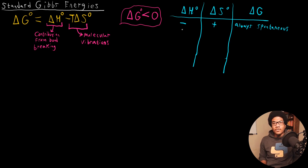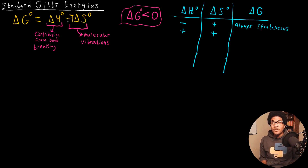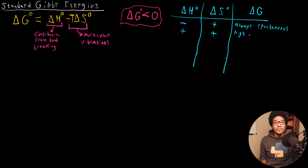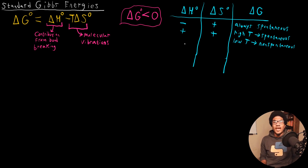What if enthalpy is positive and entropy is positive? We have an endothermic reaction with an increase in entropy. In this case, it's going to depend on temperature. If the temperature is really high, then the T delta S term is going to dominate the delta G expression and it'll be negative — spontaneous. But if the temperature is low, then the enthalpy term will dominate, it'll be positive, and the reaction will be non-spontaneous. So at high temperatures it'll be spontaneous, but at low temperatures it'll be non-spontaneous.